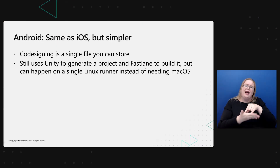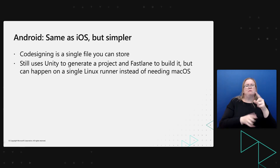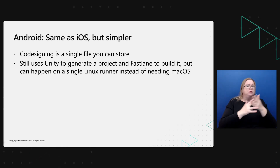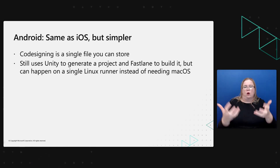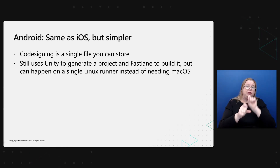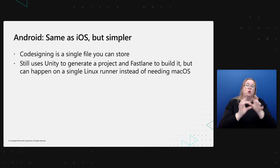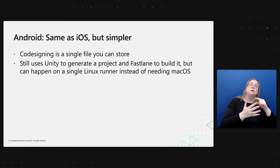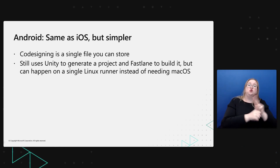Android is basically the same as iOS, just a little bit simpler. Code signing is easier — you get a JSON file at the end of your process that you can store however you want. We're still using Unity to generate Gradle projects and Fastlane to build it. But Gradle and Android Studio can run on Linux, so we can use a single machine instead of needing to do a Linux-to-macOS hop.